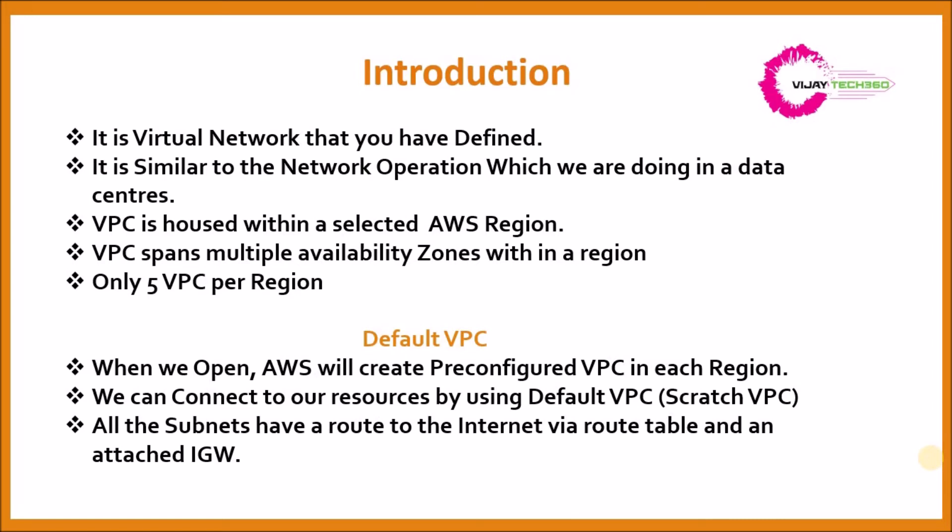All subnets have a route to the internet by using a route table and an attached internet gateway. Inside a VPC we have subnets, and these subnets are connected by using a route table. The route table connects to the internet gateway, and that internet gateway talks to the outside world — the internet. This is the minimum knowledge about VPC, but you should read the documentation to understand VPC clearly.